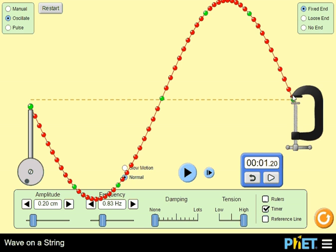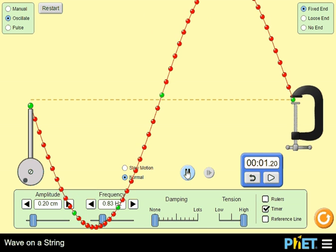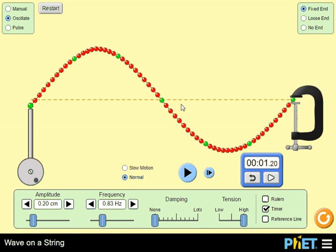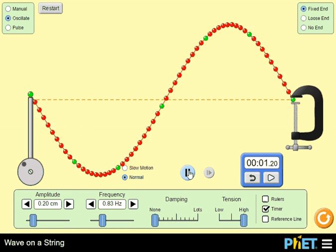These two nodes are nodes because the string is being held by some object. The interesting node here is the one in the middle. Nothing is actually holding the string here, but this green bead does not move much relative to the rest of the string because of interference. The frequency of the wave is set such that as the incident wave goes from left to right, reflected wave comes from right to left, but they always destructively interfere here. So this green bead does not move all that much.